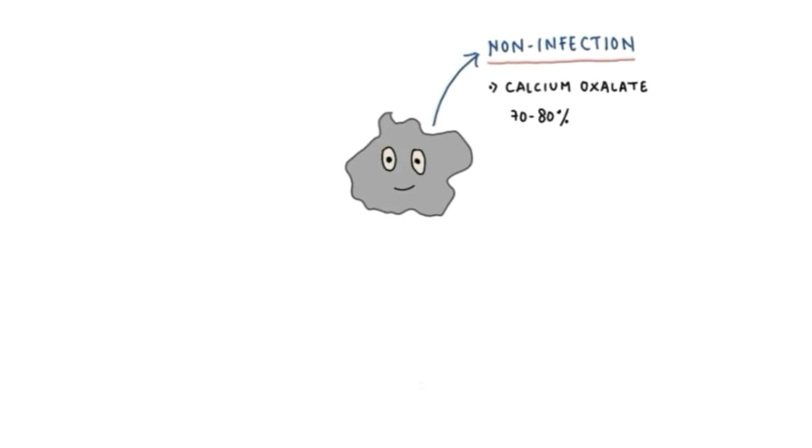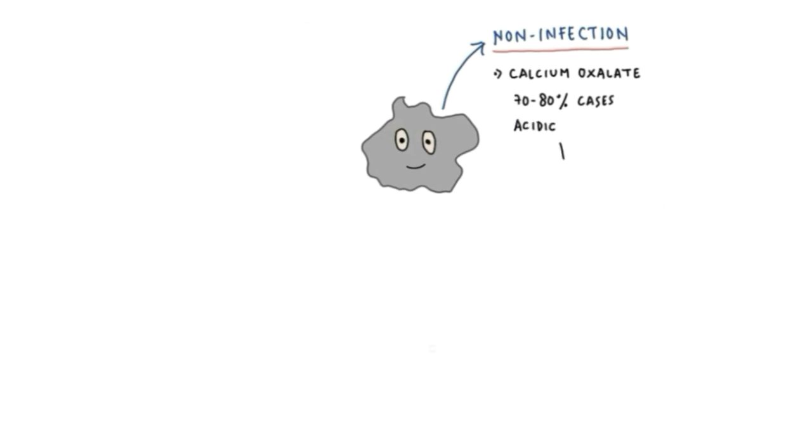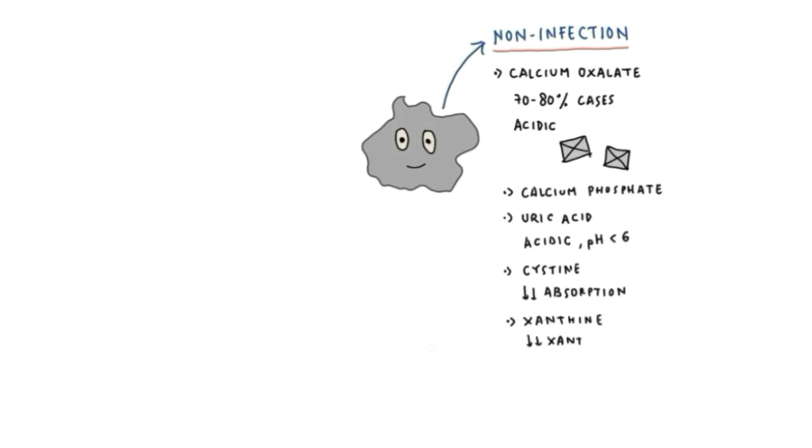Based on the formation process, stones are divided into two major groups. The first group is non-infection stone, including calcium oxalate, which is the most common component found in approximately 70 to 80 percent of cases. When you do stone analysis examination, you can see an envelope form or dumbbell form. Calcium phosphate is also another common stone. Then uric acid stone, which can form in acidic urine at pH levels below 6. Other stones include cysteine, which develops from cystinuria condition caused by decreased proximal tubular absorption of filtered cysteine, and xanthine, which results from the defect of xanthine oxidase enzyme.